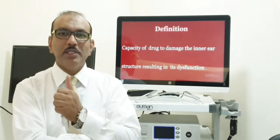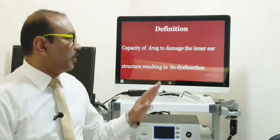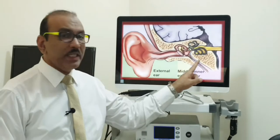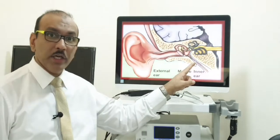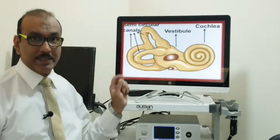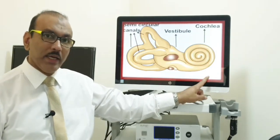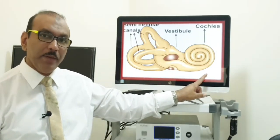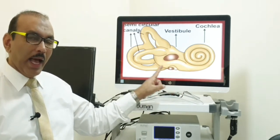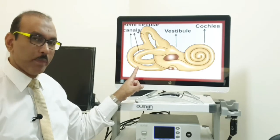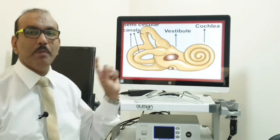Ototoxicity. The ear has two functions: one is hearing, another one is balance. If you see the inner ear and take out the picture of the inner ear alone, it will look like this. The cochlea is concerned with hearing, the vestibule — the middle part — and the semicircular canal — the posterior part — these two parts are concerned with balancing.